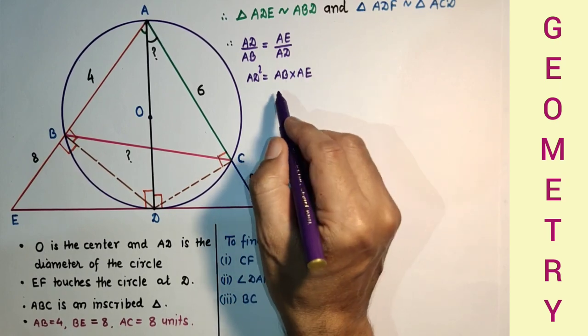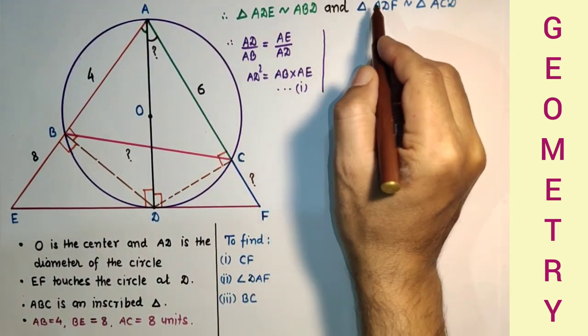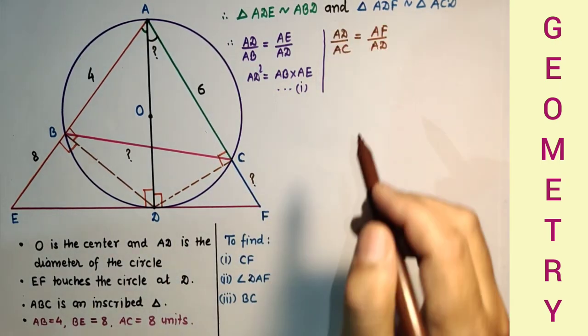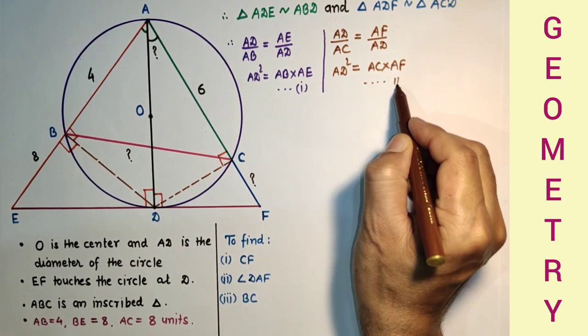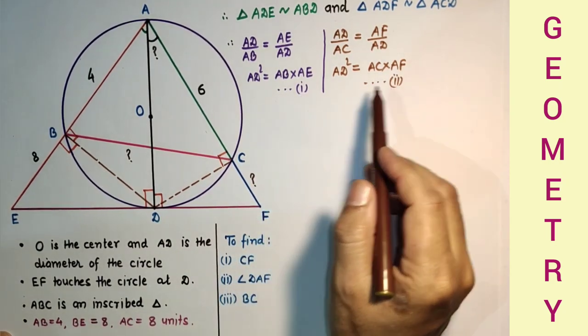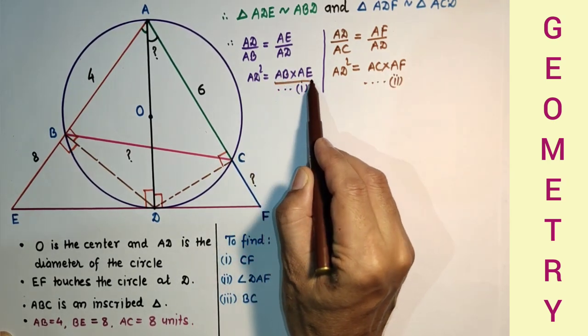And in this case, AD by AC is equal to AF by AD, and that is AD² = AC×AF. So this is the second relation. From first and second, AD² equals this and AD² equals this, it means AB×AE = AC×AF.